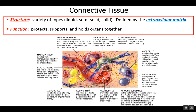Connective tissues are much more variable — they come with different characteristics. Some connective tissues are liquid, others are solid, and even others are a semi-solid or gel-like material. What distinguishes each connective tissue from one another is not the cells, like epithelial tissue. Connective tissue is based on the extracellular matrix that the cells produce. This extracellular matrix could be liquid, a gel-like material, or a solid calcium phosphate material like in bone.